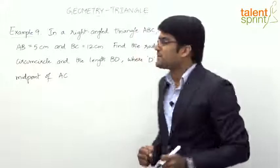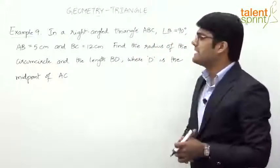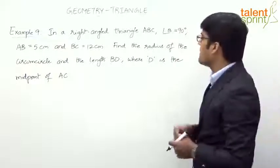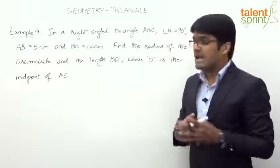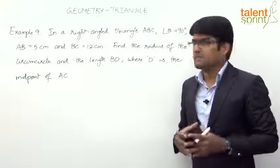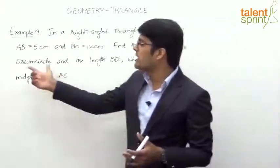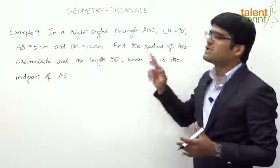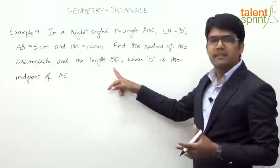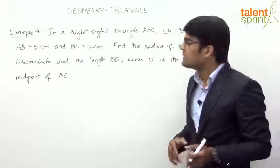Let's move on to example number 9. In a right angle triangle ABC, angle B is 90 degrees, AB is 5 centimeters and BC is 12 centimeters. Find the radius of the circumcircle and the length BD, where D is the midpoint of AC. This question is based on the circumcenter, since we are talking about the circumcircle.